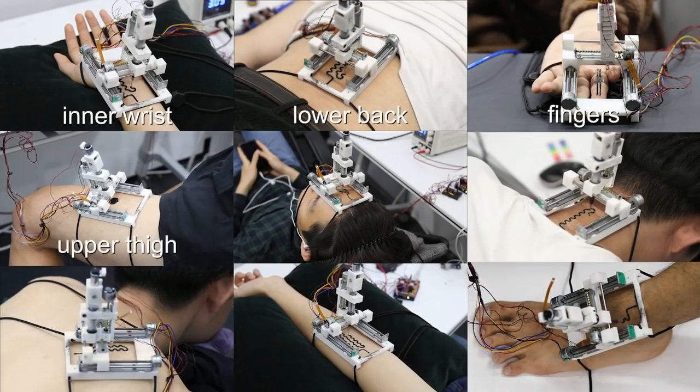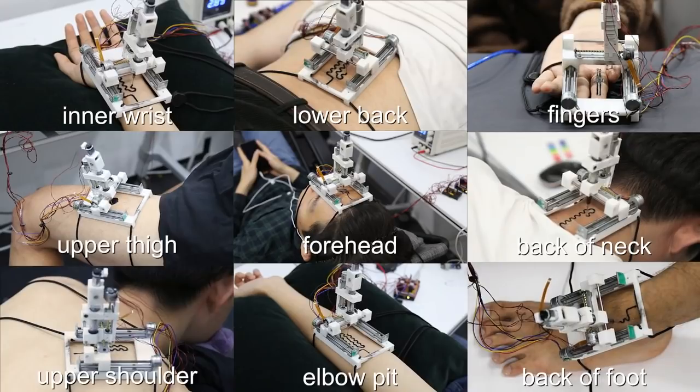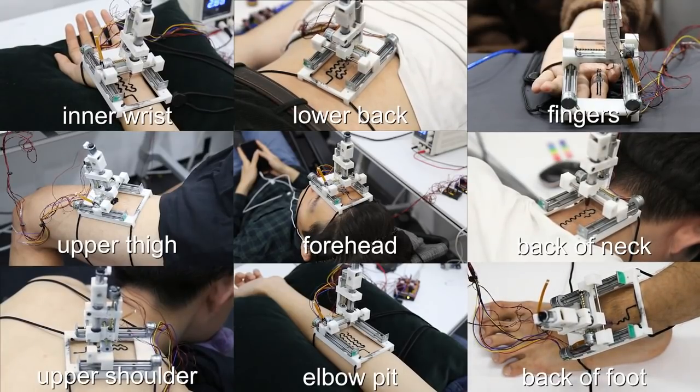Body printer can print on arbitrary body locations from head to toe, ranging from the large surface of the back to small area on the fingers.